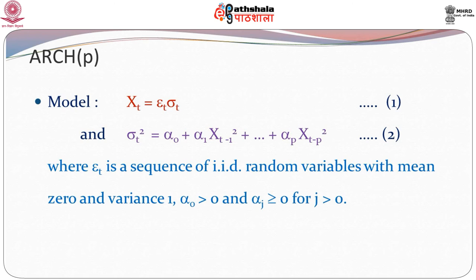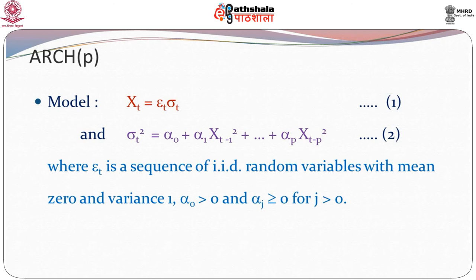We can without loss of generality assume the variance of epsilon_t to be 1. For the time being, let us assume alpha_0 is greater than 0 and all the alpha_j's are greater than or equal to 0. This condition is required because sigma_t squared actually turns out to be the variance. To ensure that the variance in the second equation does not become negative, we need to have the alphas positive. Remember that all the x's are squared values, so whatever the sign of x, the values come out to be positive. This condition ensures the positivity or non-negativity of the variance.